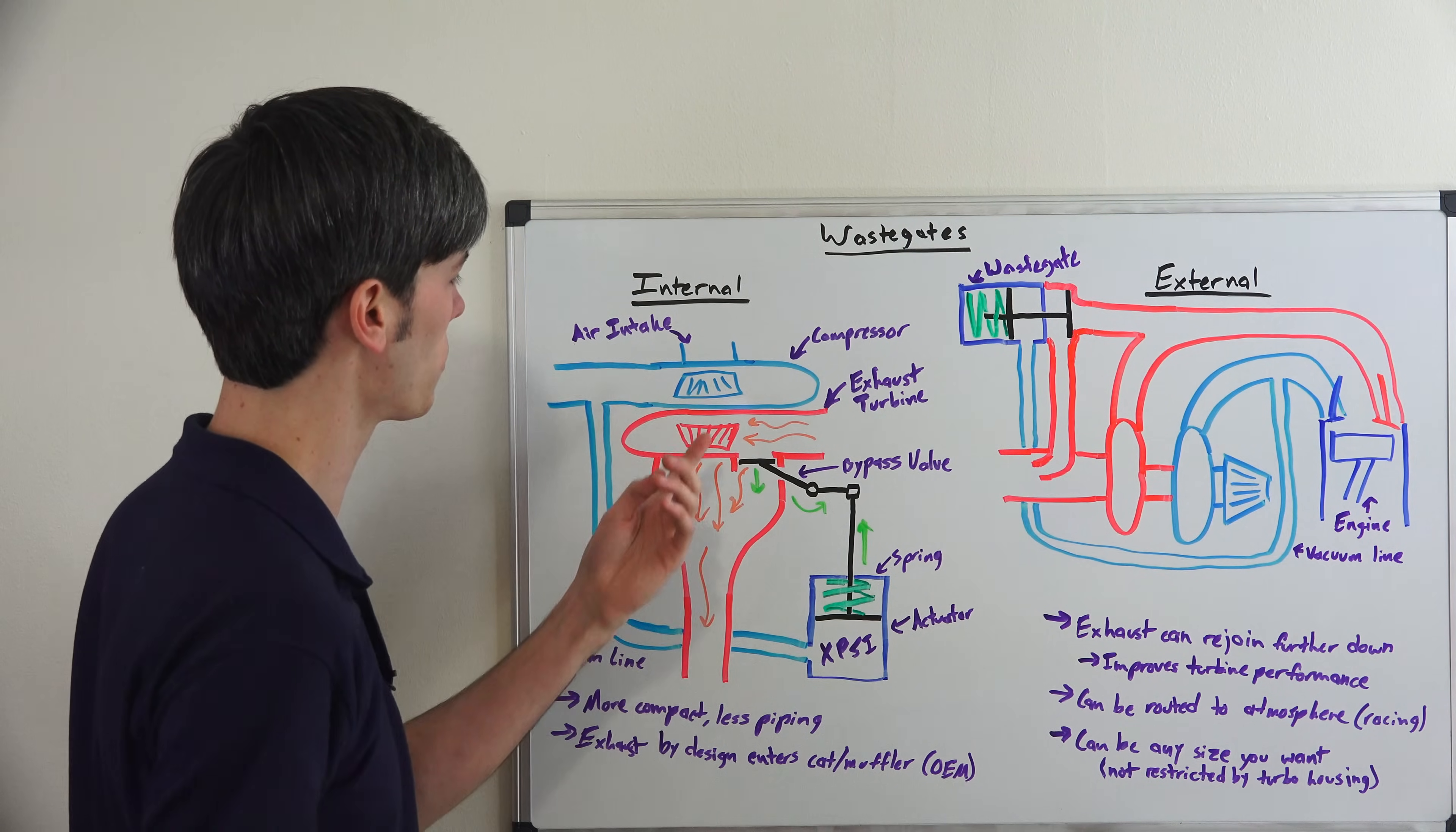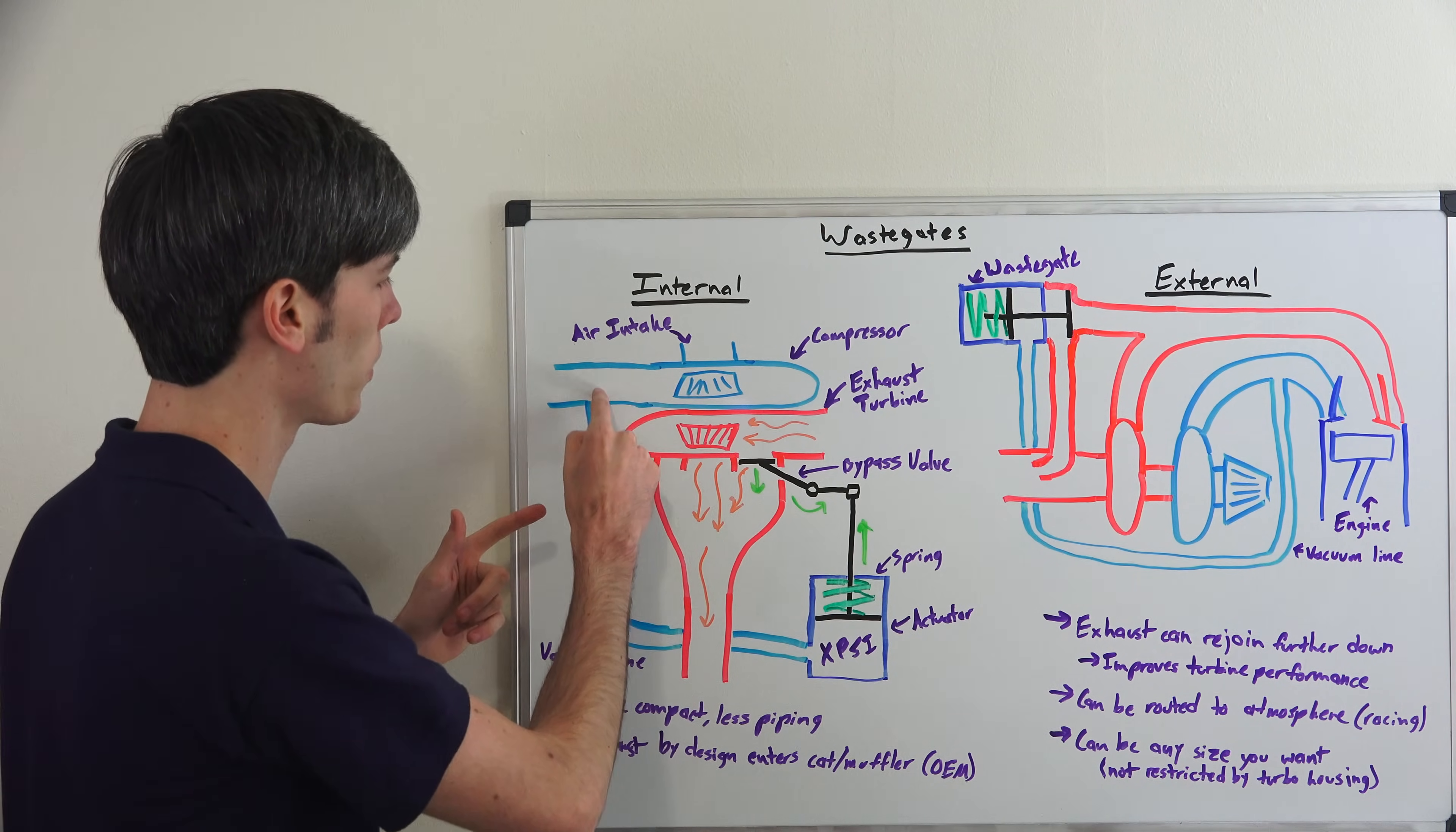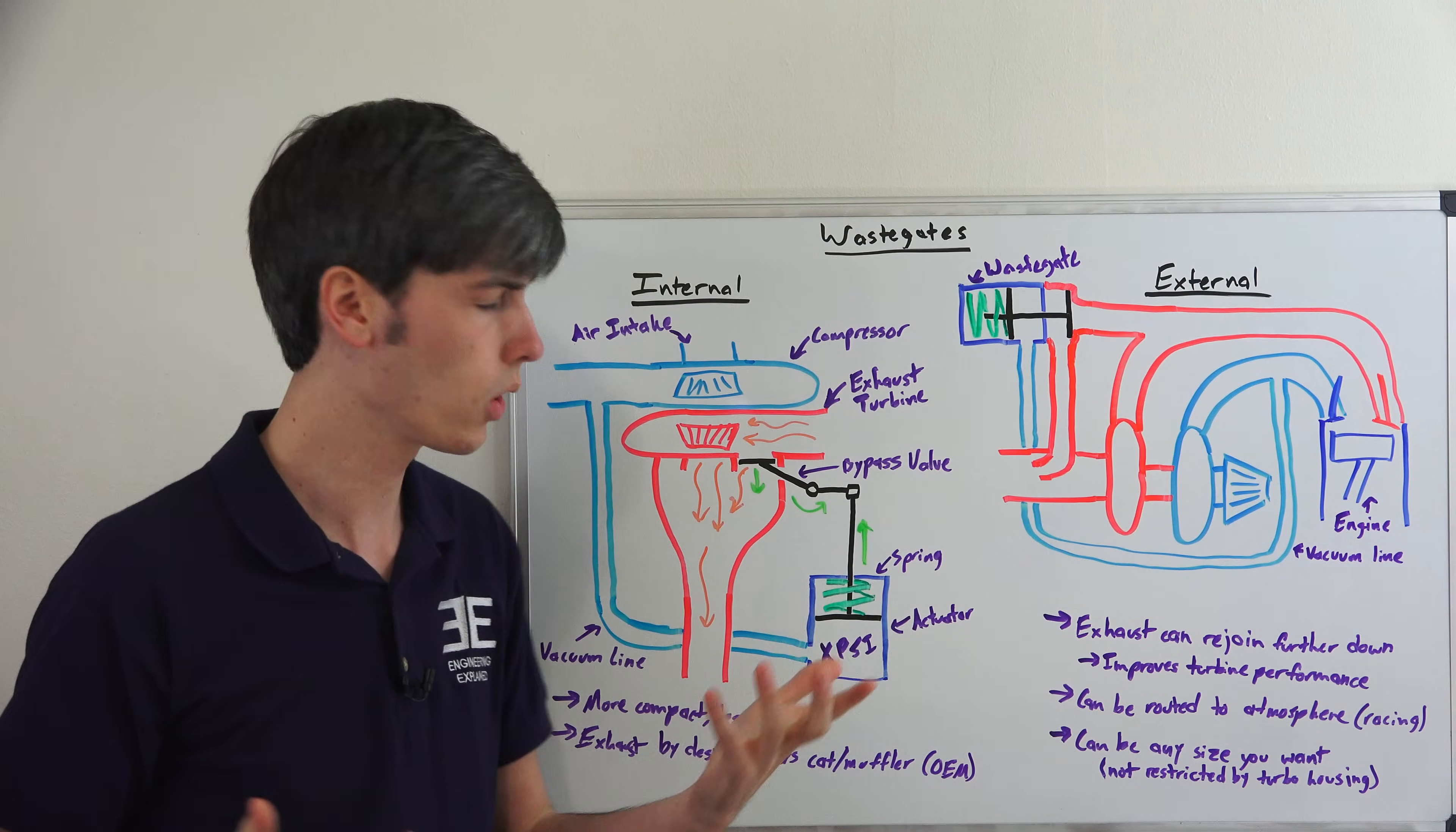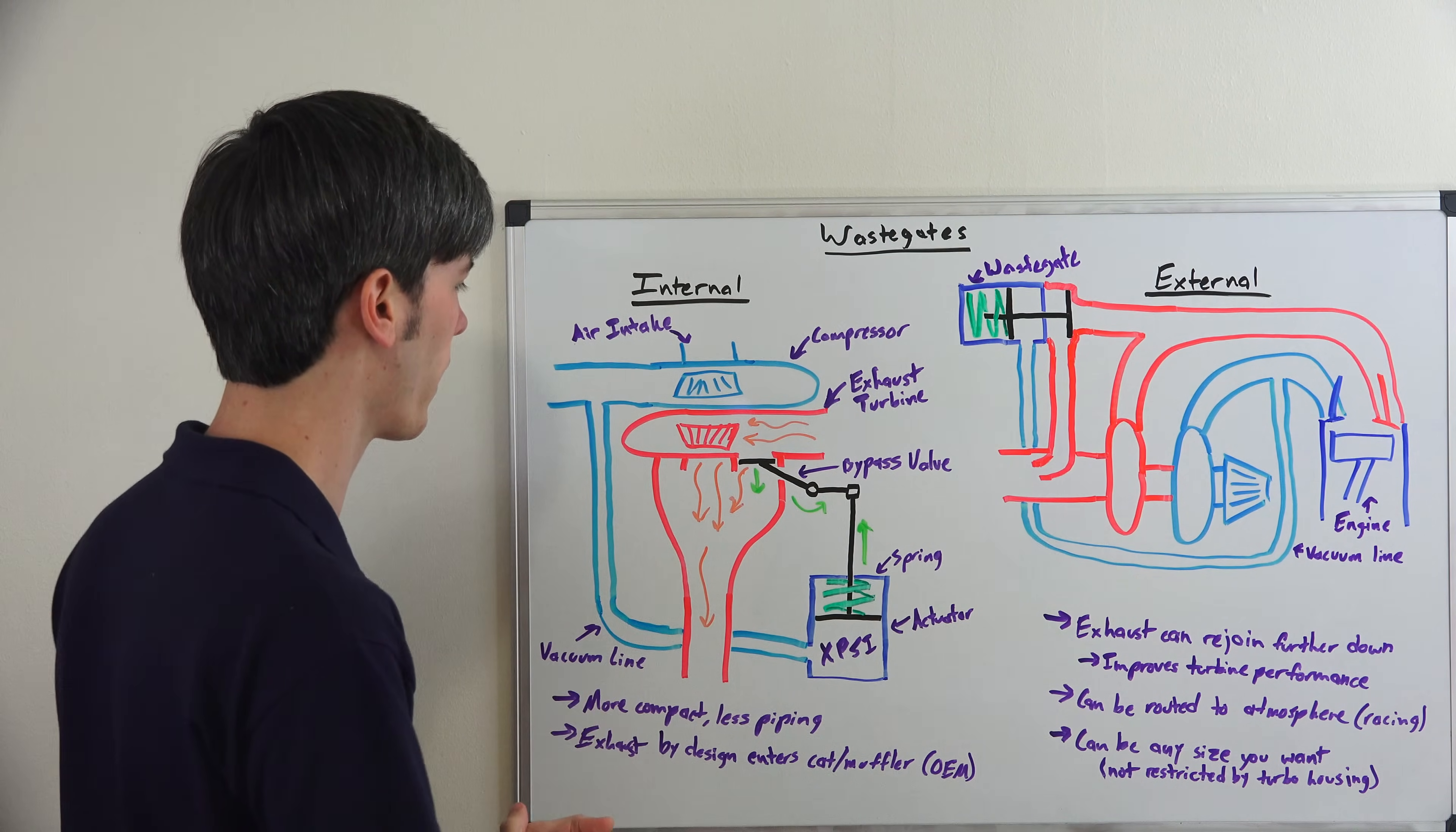So as this exhaust is spinning up and providing more boost, at a certain point that boost is going to reach a certain pressure and that pressure is going to travel through this vacuum line. I call it a vacuum line because under most conditions it's going to be a vacuum but when you're under boost of course it's going to be above that.